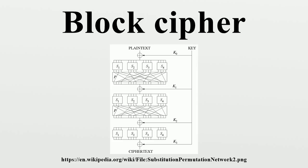One advantage of the Feistel model compared to a substitution permutation network is that the round function does not have to be invertible. The Lai-Massey scheme offers security properties similar to those of the Feistel structure. It also shares its advantage that the round function does not have to be invertible. Another similarity is that it also splits the input block into two equal pieces. However, the round function is applied to the difference between the two, and the result is then added to both half blocks.